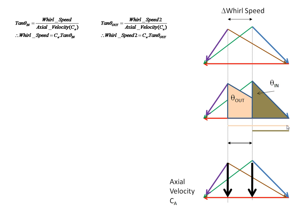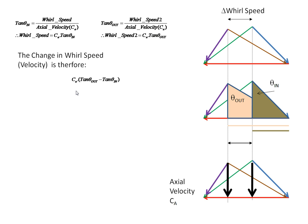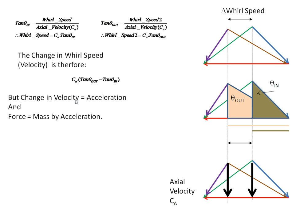Similarly, the whirl speed on the output side is CA × tan θ_out. So the change in whirl speed, or change in velocity, is CA times (tan θ_out minus tan θ_in). A change in velocity is an acceleration, and we know that force equals mass times acceleration. So if I multiply this quantity by the mass of air, I get a force: mass of air times CA × (tan θ_out − tan θ_in) tells us the force acting on the rotor blades.